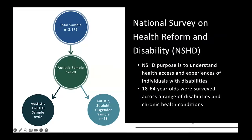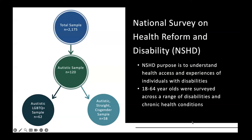This was part of a national survey launched after the enactment of the Affordable Care Act, really to understand the impact healthcare reform was having on people with disabilities. From that sample, we pulled data on individuals who identified as autistic. Within the larger sample of 2,000, there were 120 individuals who self-reported as autistic — 62 of those reported they were also sexual and gender minorities, and 58 were straight cisgender. The survey covered those 18 to 64 years of age.